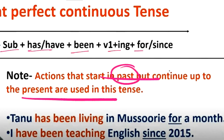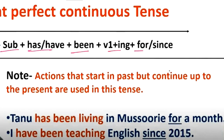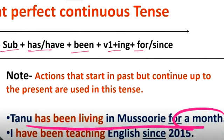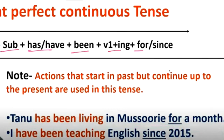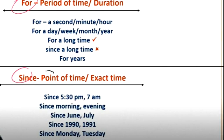There is a rule: actions that start in the past but don't continue, we use past tense. Actions that start in the past and continue up to the present, we use present perfect continuous. Tanu has been living in Mussoorie for a month. I have been teaching English since 2015. Since means I am still teaching now.